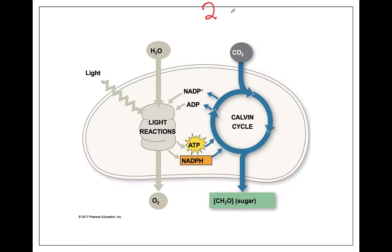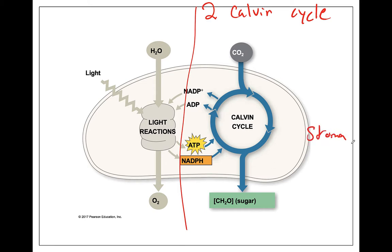The second major reaction in photosynthesis is the Calvin cycle, sometimes called the Calvin-Benson cycle. This is going to happen in the stroma, outside of the thylakoid membrane. We're going to use the ATP and the NADPH produced in the light reactions to power the cycle. We'll need carbon dioxide as our carbon source, and then we're going to eventually create glucose.